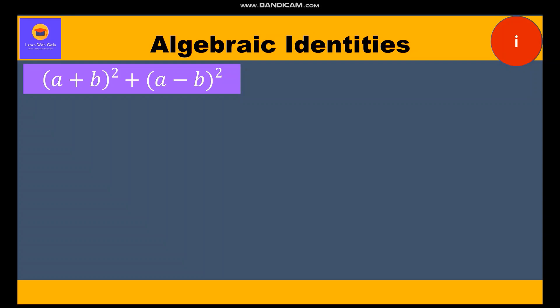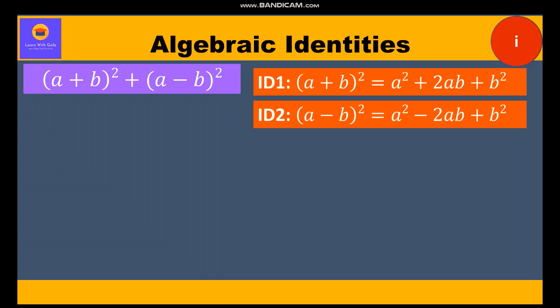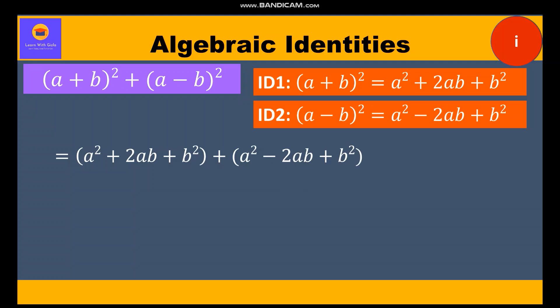Clearly the first bracket is identity 1, (a+b)², and the second bracket (a-b)² is identity 2. We shall expand accordingly: (a² + 2ab + b²) + (a² - 2ab + b²).